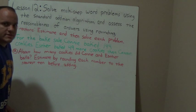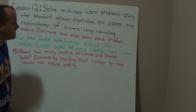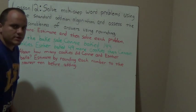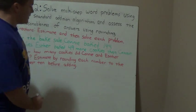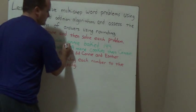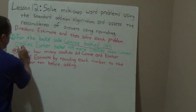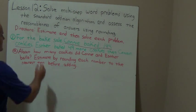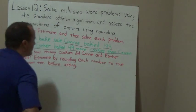So what we're going to use to solve this is what's called a tape diagram. We learned about it in class yesterday. So let's go ahead and create a tape diagram. But before we do, let's underline our important information. For the bake sale, Connie baked 144 cookies — that's important. Esther baked 49 more cookies than Connie — let me underline that as well.